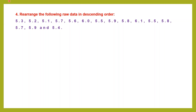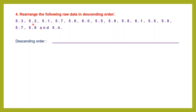Question 4: rearrange the following raw data in descending order. Descending means from big to small. Let's look for the greatest number: 5.3, then 5.7, then 6, then 6.1. Let's see if there is anything greater than 6.1 — 5.5, 5.9, 5.5, 5.8, 5.7, 5.9 and 5.4. So 6.1 is the greatest. Let's write that down first: 6.1.